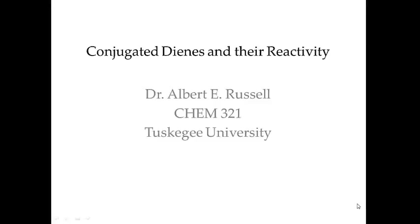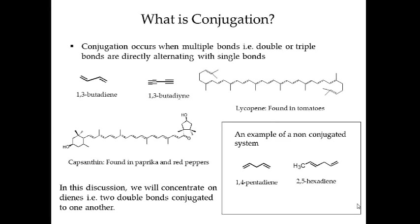This video discusses conjugated dienes and their reactivity. Let's jump in. We talked a little bit about conjugation, with a rudimentary definition that conjugation is just a pattern of alternating double and single bonds. You can see that here: double bond, single bond, double bond. It doesn't have to be a double bond; it can also be a triple bond.